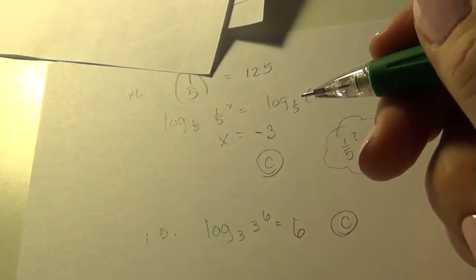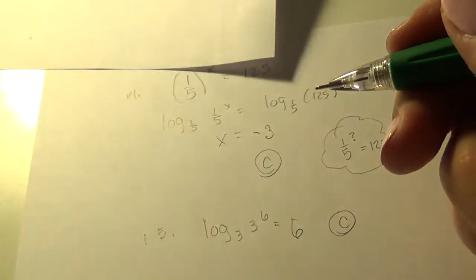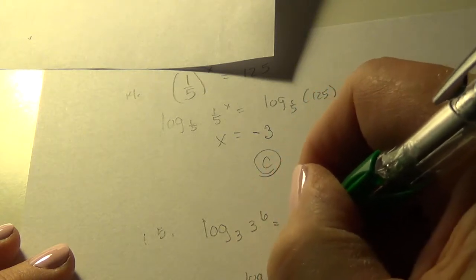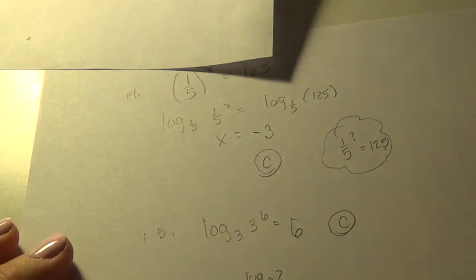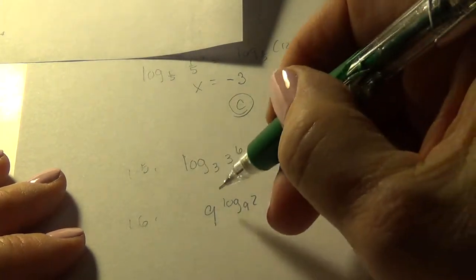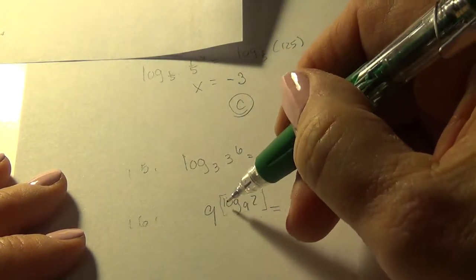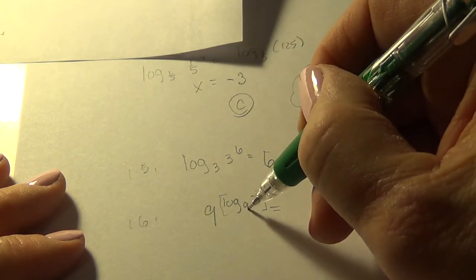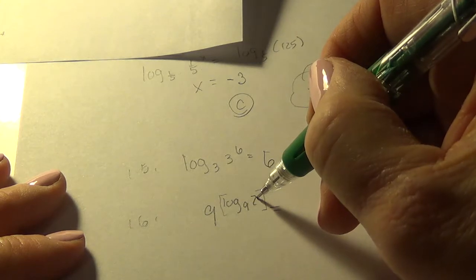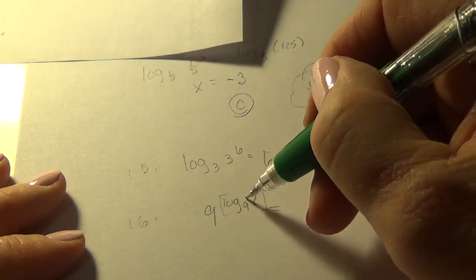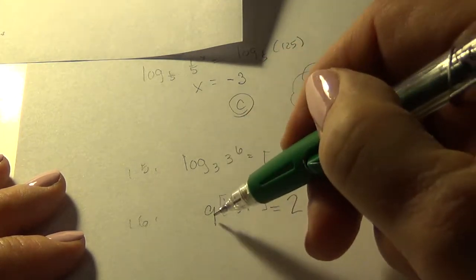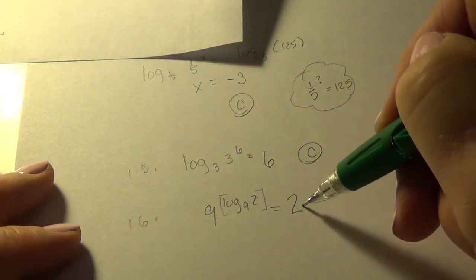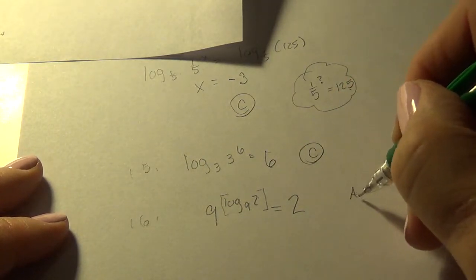Number 16: 9 raised to log to the base 9 of 2. Alright, this one is a different way of thinking. It is saying, here in this section, this is the exponent I raise 9 to to get 2. So whatever that is, I'm going to raise 9 to it, so I get 2. So when you raise 9 to the exponent that you raise 9 to to get 2, you do get 2. And that answer is A.